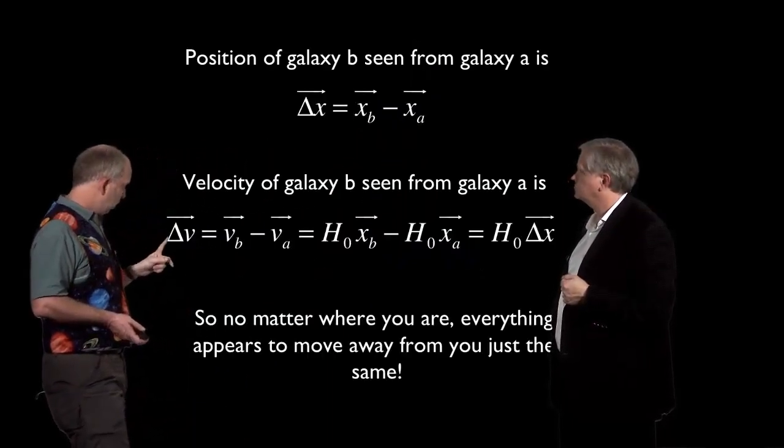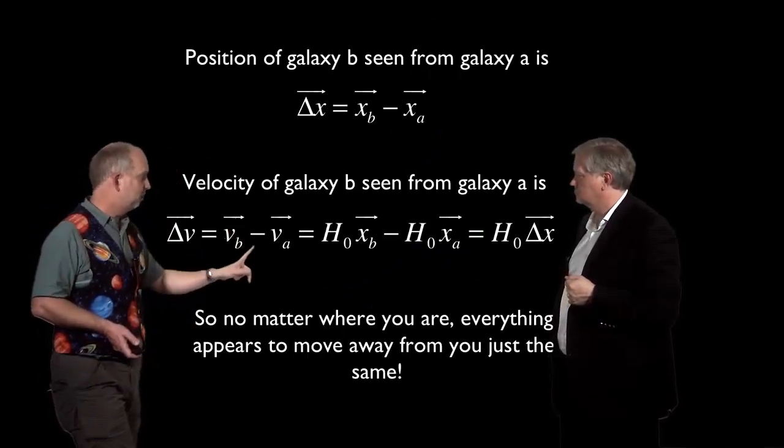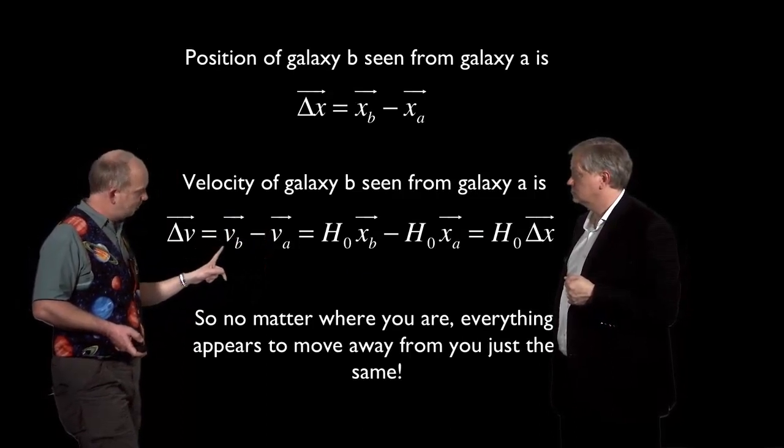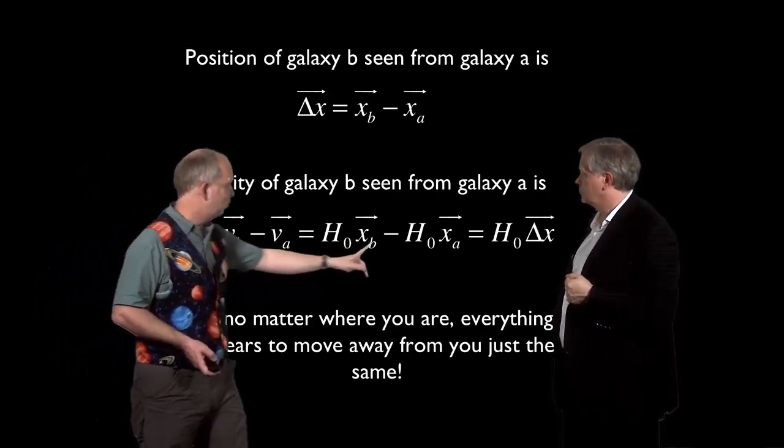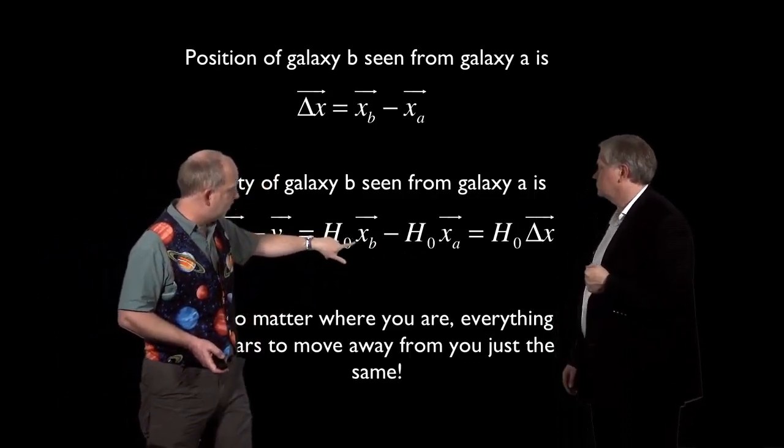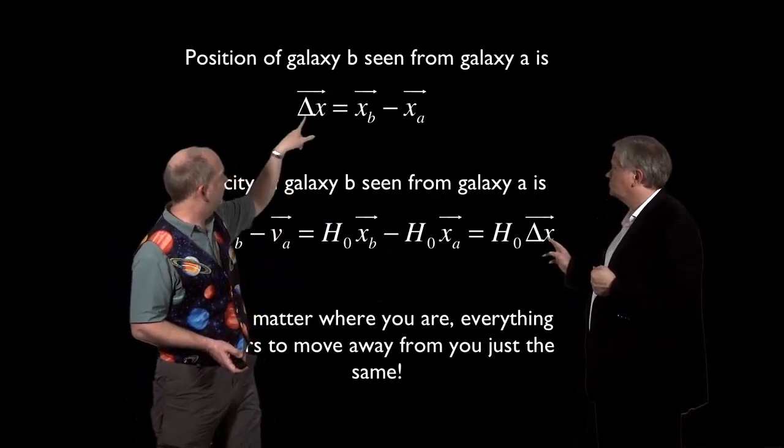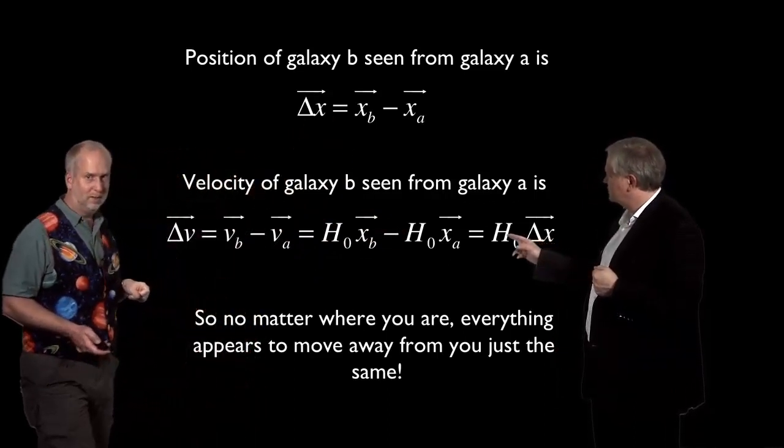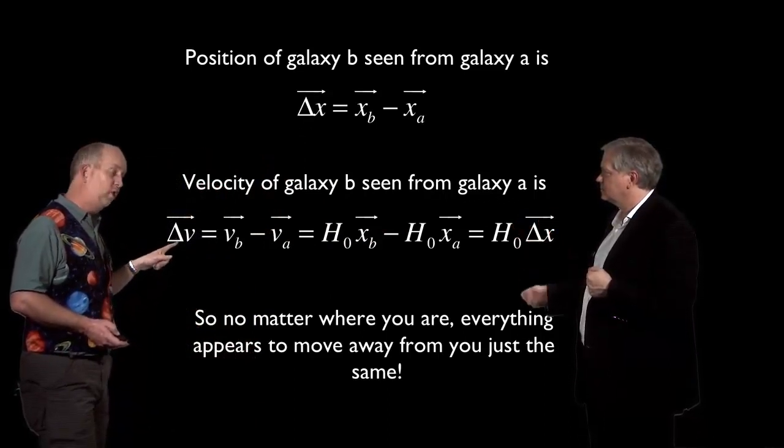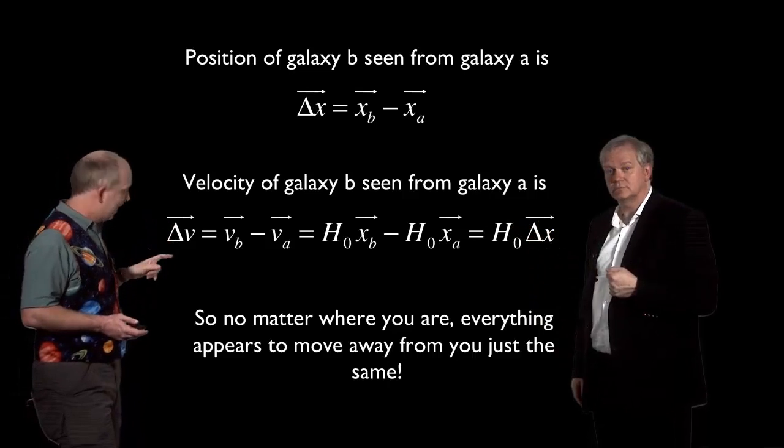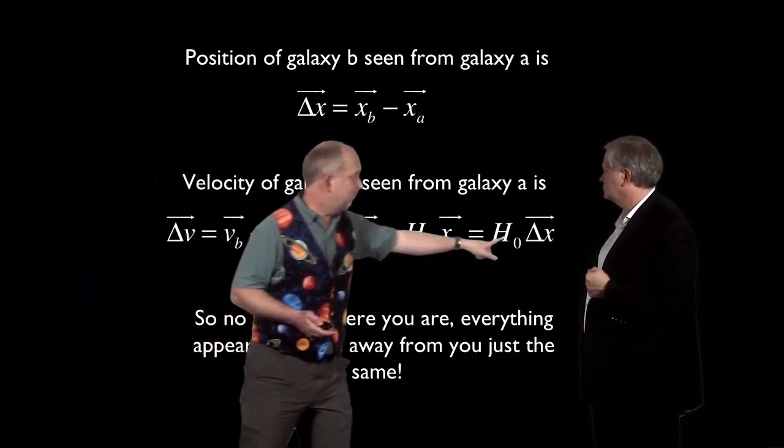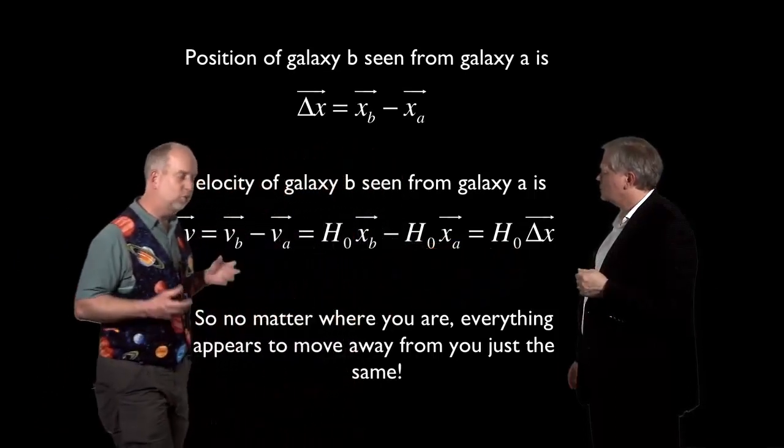So if you do that calculation, we know that relative velocity is velocity B vector minus velocity A. But we also know from the last slide that velocity B is h0 xB, and velocity A is h0 xA. And so if you take the h0 outside, it's just h0 times xB minus xA, which we just set up here as delta x. So it's the distance times the Hubble constant. So what they're seeing is the velocity of the aliens on galaxy A are seeing that the velocity of the galaxy B relative to them is just equal to the Hubble constant times the distance relative to them. Just what we see on Earth.